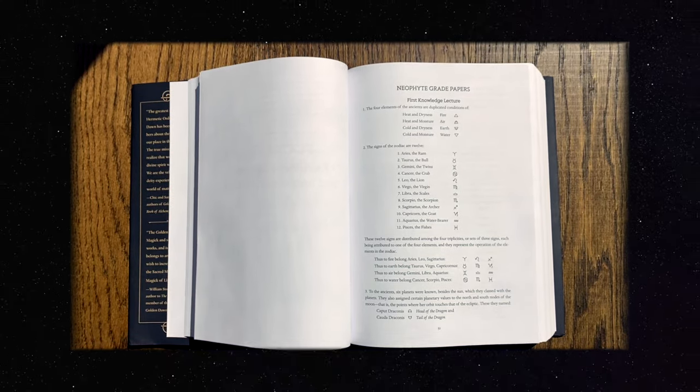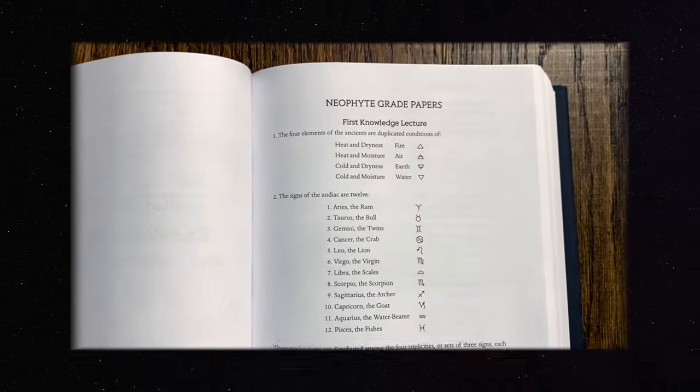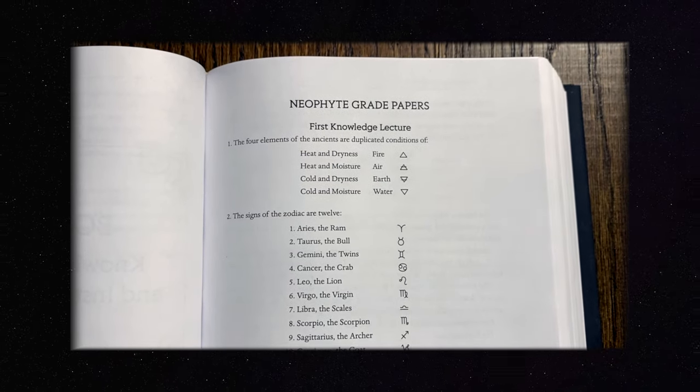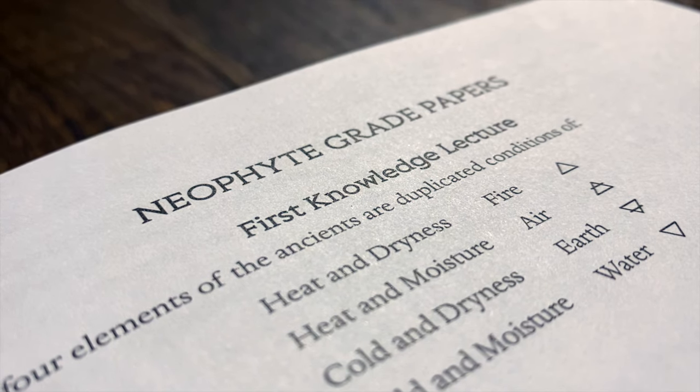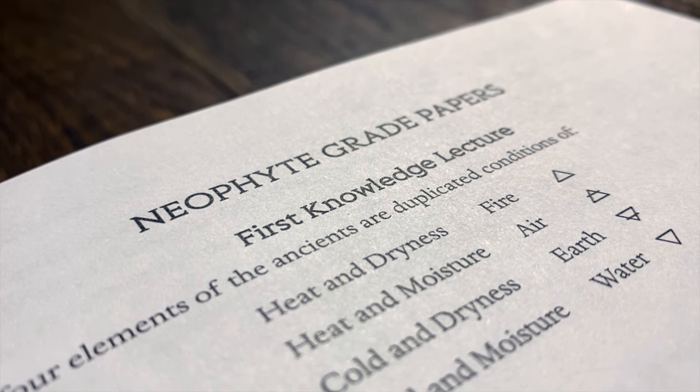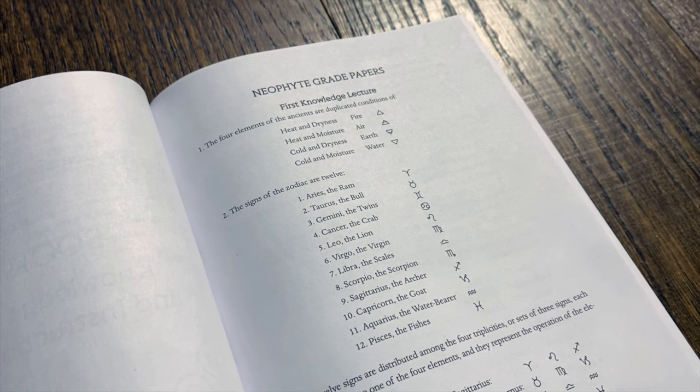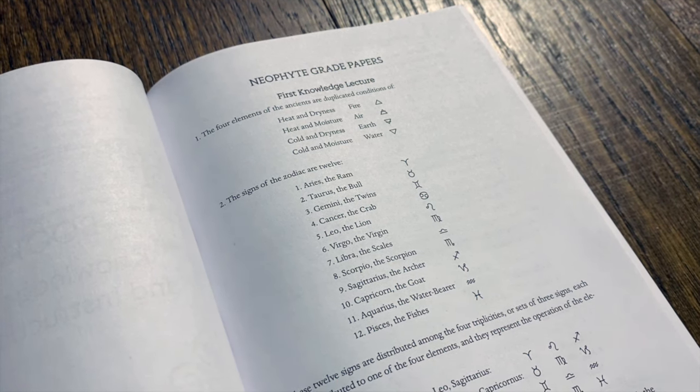Neophyte Grade Papers, First Knowledge Lecture. One: the four elements of the ancients are duplicated conditions of heat and dryness, fire; heat and moisture, air; cold and dryness, earth; cold and moisture, water.